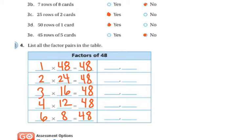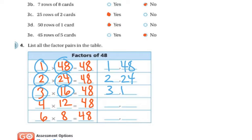5 does not go into 48, but 6 does, and 6 times 8 is 48. 7, 8, and 9 do not. So my factors are 1 and 48, 2 and 24, 3 and 16, 4 and 12, and 6 and 8.